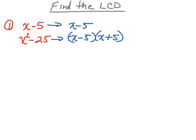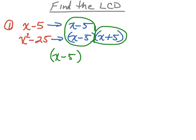Using the difference of squares, to find the least common denominator, you'll notice that we do have some factors they share in common. So that x minus 5 is going to be part of our least common denominator. But we also have this x plus 5 that we need to include. Therefore, both of these factors represent my least common denominator.